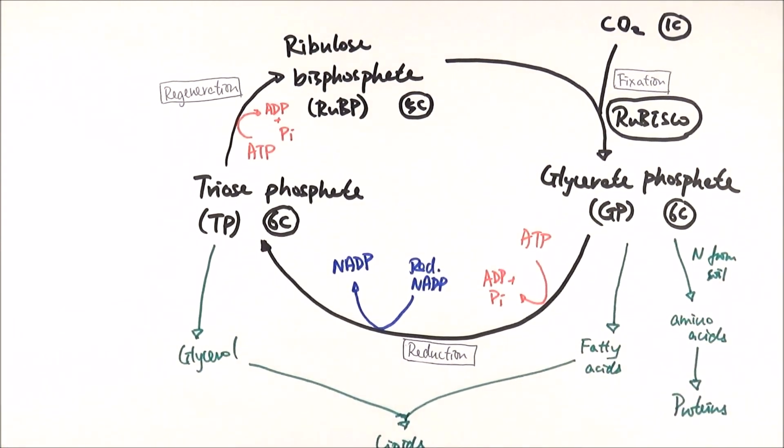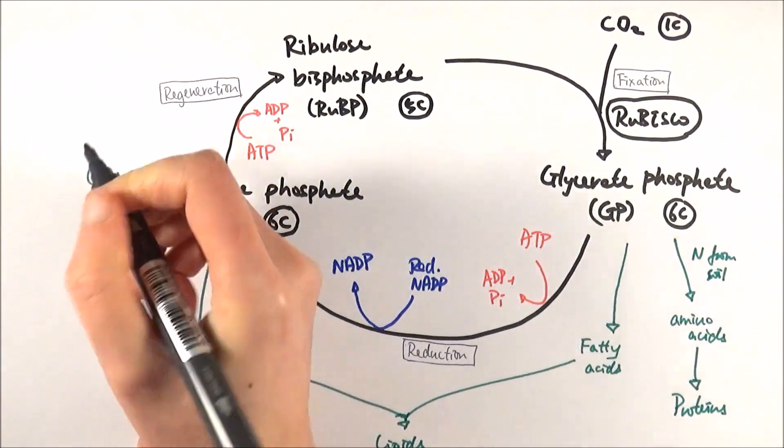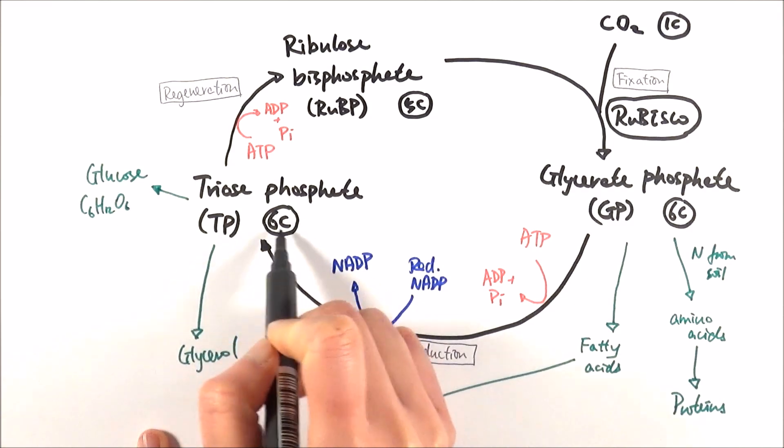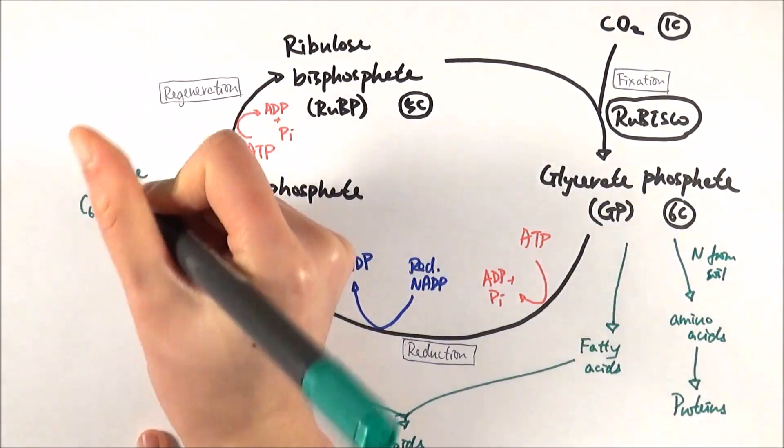Finally, the most important bit, the one that we get from photosynthesis, which is glucose, can also be made from triose phosphate. Glucose formula is C6H12O6, which makes sense because triose phosphate is also a six-carbon molecule like that.